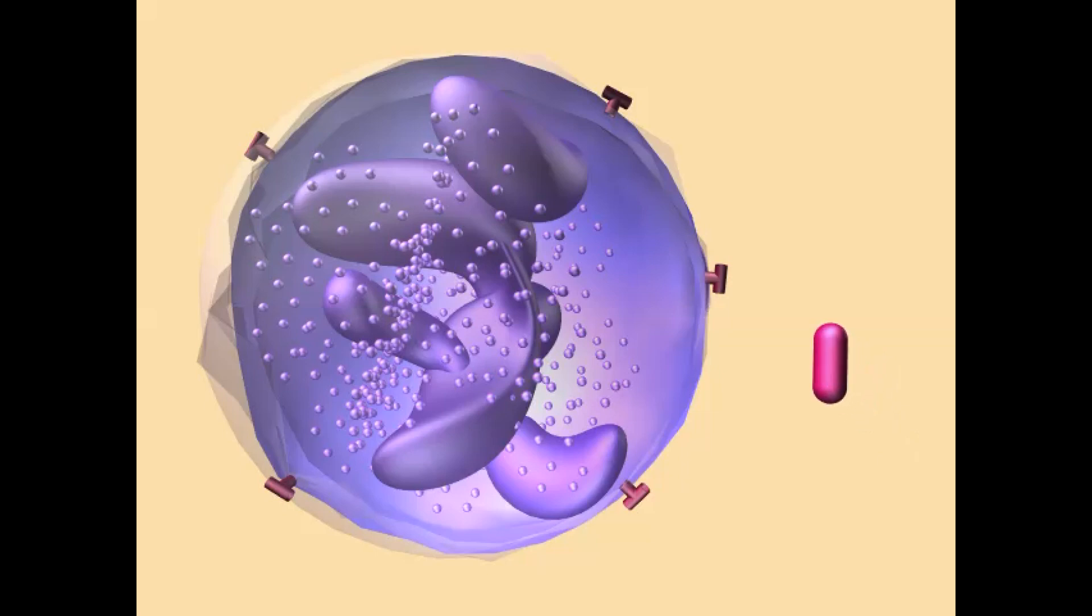It has receptors on its cell membrane which recognize microbes, and when a microbe binds to these receptors, this can initiate the process of phagocytosis.